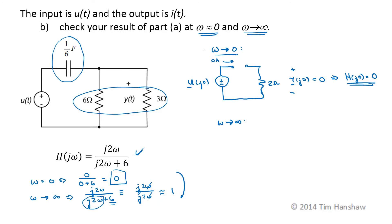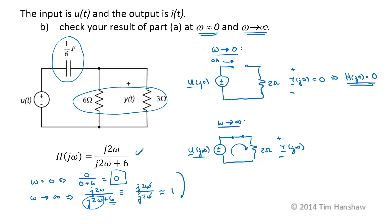And as omega goes to infinity, the capacitor looks like a short circuit. This is still a 2-ohm equivalent resistance. KVL around the loop says that the output voltage Y is just equal to the input voltage U. So H of J0 is the ratio of Y to U at that frequency; since those are the same, this ratio is just equal to 1. And that also agrees with our frequency response.